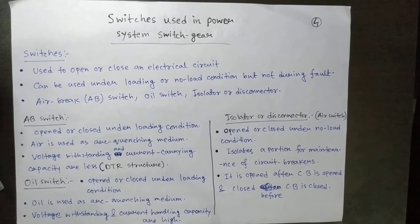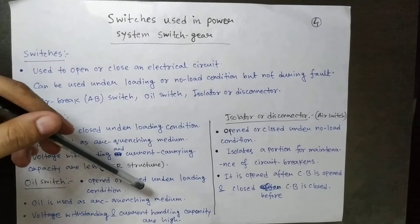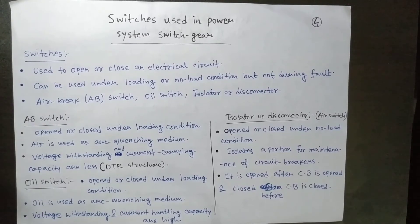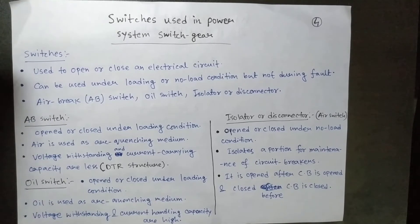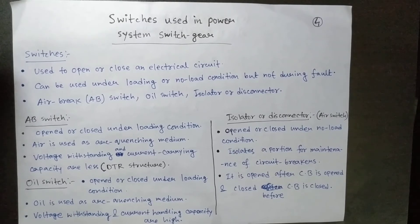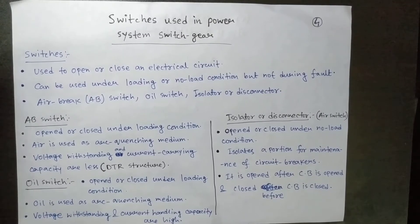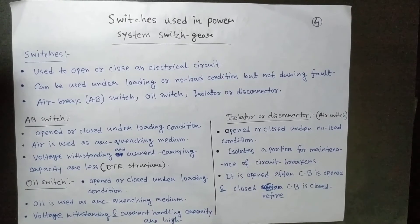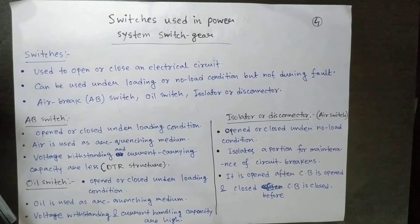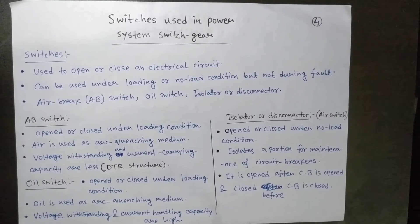When it comes to the oil switch, it is also opened or closed under loading condition, but here oil is used as the arc quenching medium. Because oil has a larger dielectric strength compared to air, the voltage withstanding capability for this kind of switch is higher compared to the AV switch.